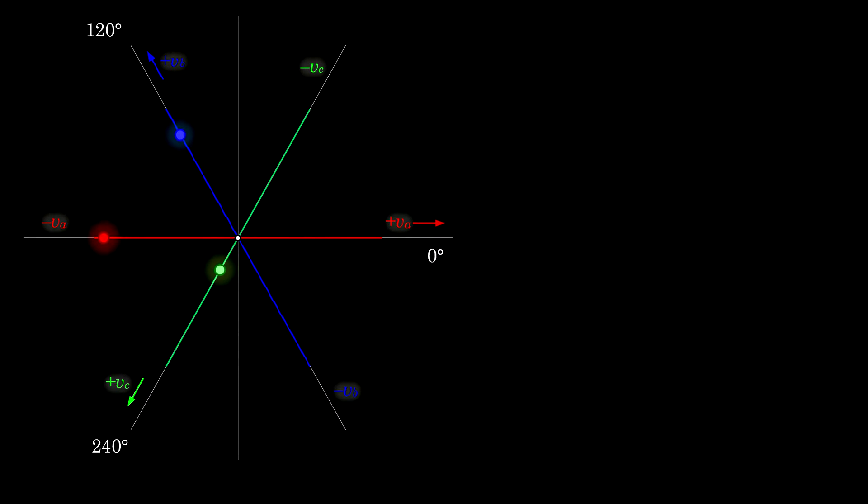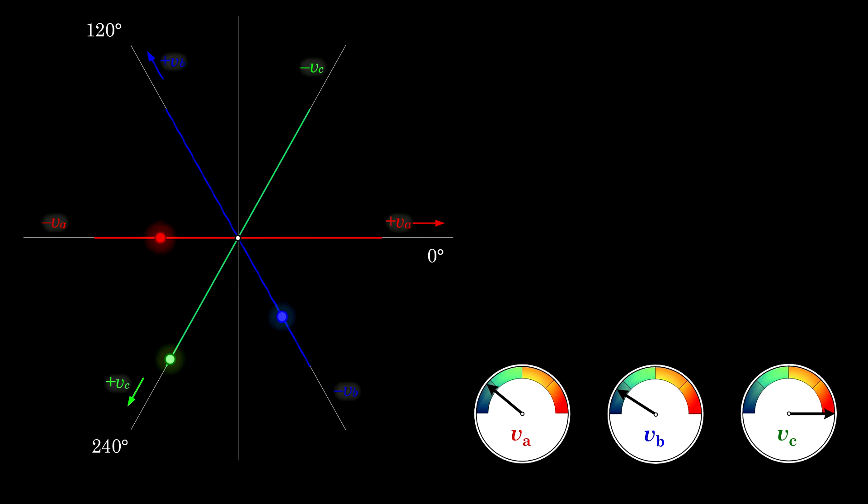Let's check the actual values of those voltages with these voltmeters. Again, we notice the voltmeters alternate between a max value, indicated red on the scale, and min value, shown in blue.